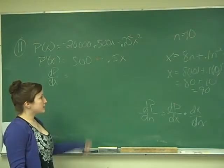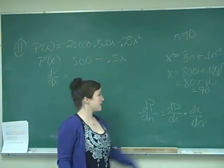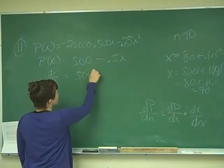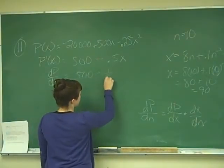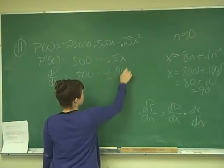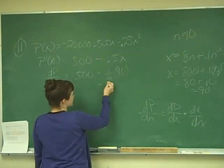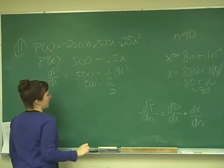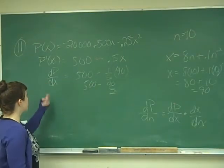And we know when there are 10 workers, x equals 90. So we know that dp over dx would be 500 minus, this is one half times 90, which is just minus 90 over 2. So this is dp over dx.